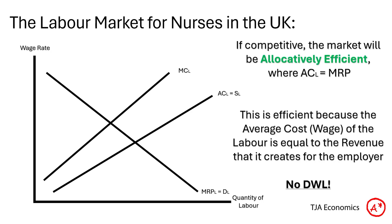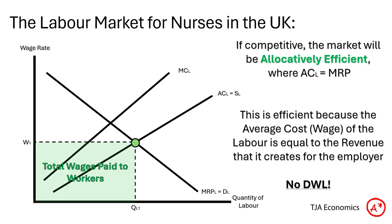If this market were to work competitively, it would end up being allocatively efficient, where the average cost of labour — the wage rate — is equal to the marginal revenue product of that labour. This is efficient because the wage equals the revenue that labour creates for the employer. There is no deadweight loss, and as this green box shows, the total wages paid to workers is maximised when the market is allocatively efficient.